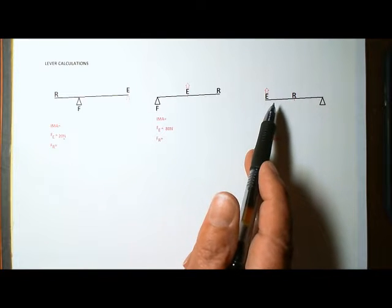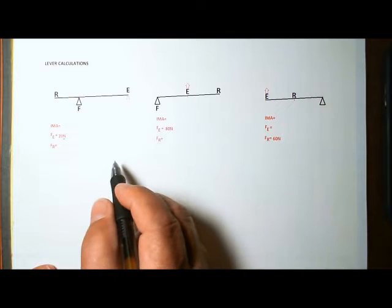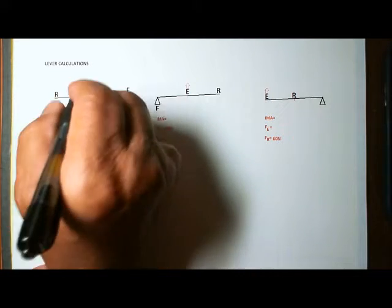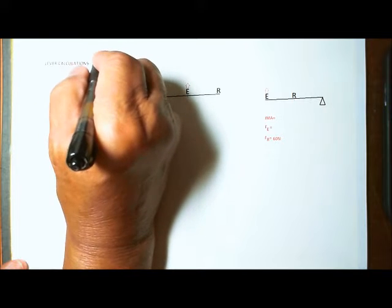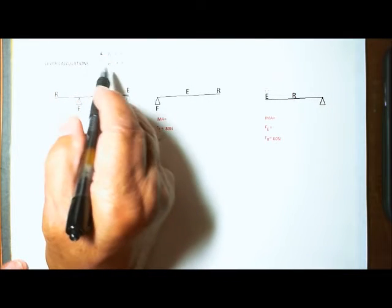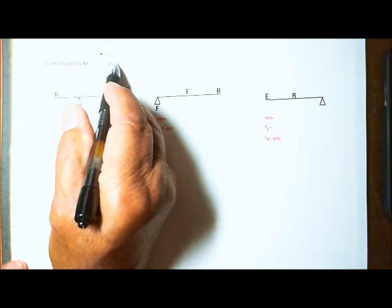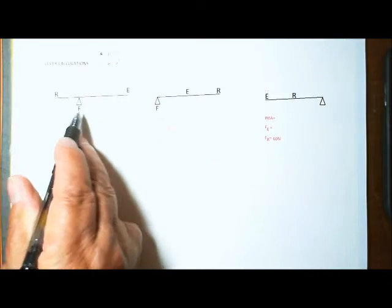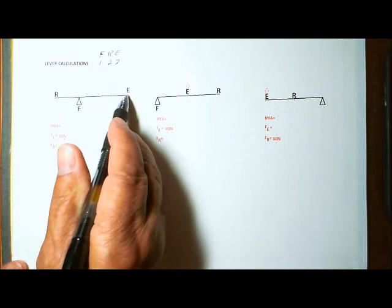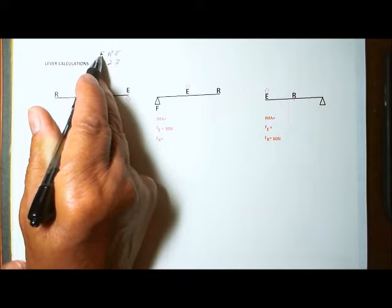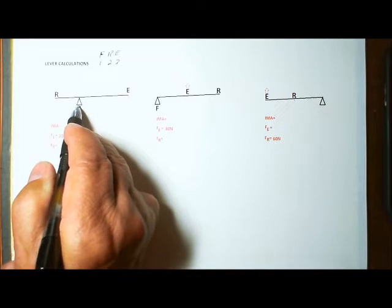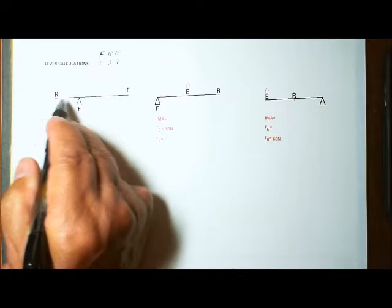The first thing we have to do is figure out what type of levers we're working with. If you recall from the previous video, I gave you the acronym FRE-1-2-3 to help you remember whether you're dealing with a first, second, or third class lever. Looking at the first lever, the fulcrum lies somewhere between the resistance and the effort forces, so this is a first class lever.